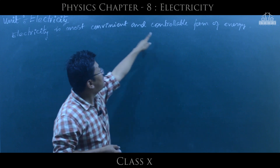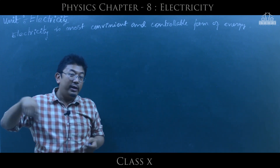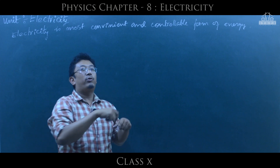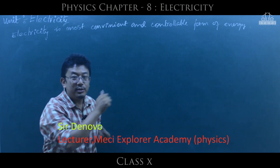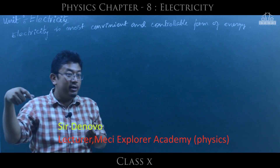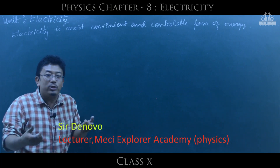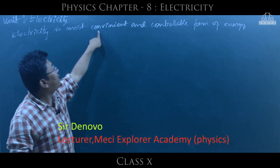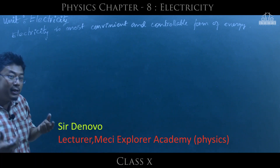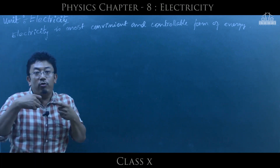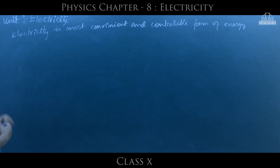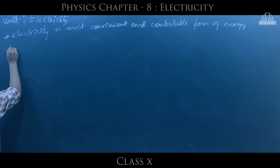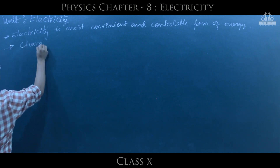The second point is that electricity is a convenient and controllable form. For example, with a fan, if it comes to the regulator, it will be controlled. And if it comes to the ON state, the bulb system will also be controlled. So handling is more convenient. Electricity is the most convenient and controllable form of energy.